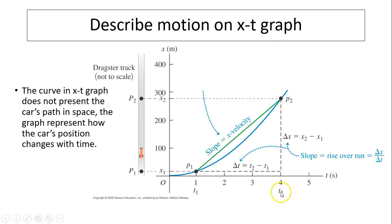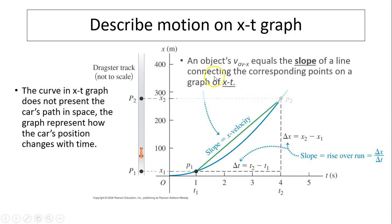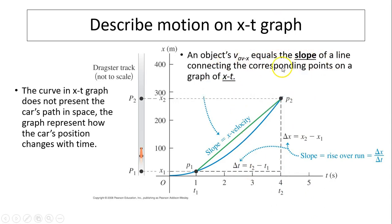How do we find average velocity from this graph? Average velocity equals to the slope. Average velocity is the slope of the line. From p1 to p2 is this green, the slope of the green line. How do we know? Because the slope of the green line equals to rise over run. Rise is delta x, and run is delta t. That's displacement over time gives you average velocity.